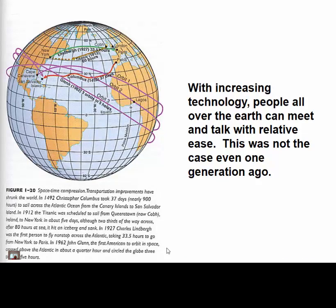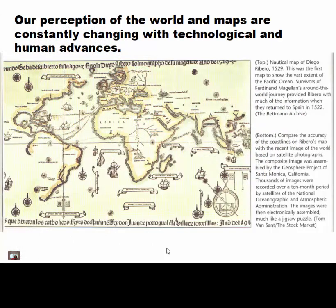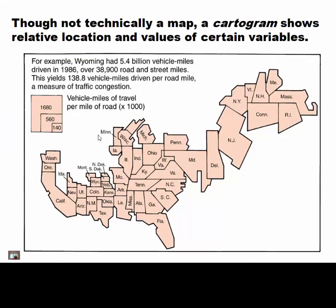With increasing technology, people all over the world can meet and communicate with relative ease — something that wasn't even the case a generation ago. Our perception of the world is constantly changing with human advances. You can see this map from 1494 — Australia isn't shown, South America kind of disappears, and the west coast of the United States is missing. You can see maps improving over time. And though technically not a map, we have something called a cartogram.